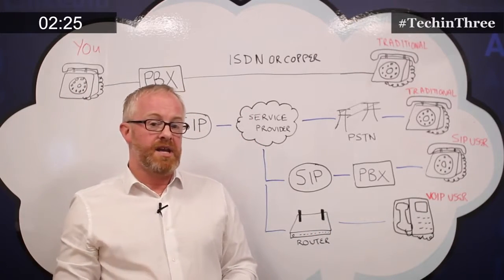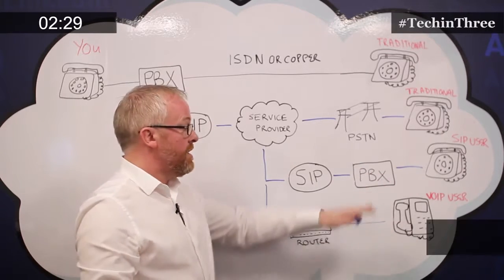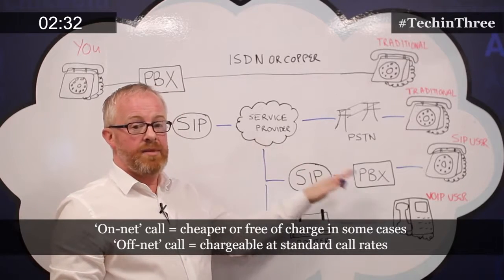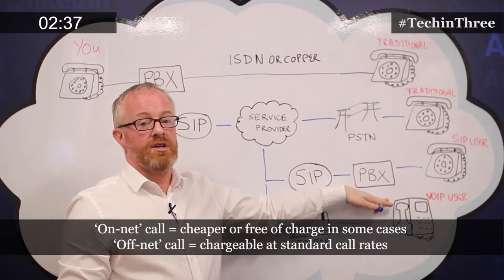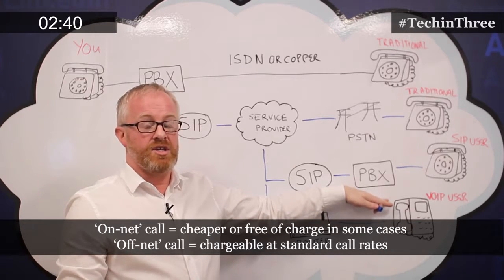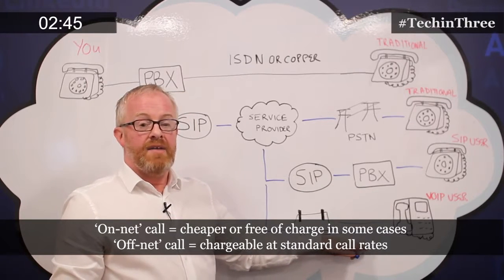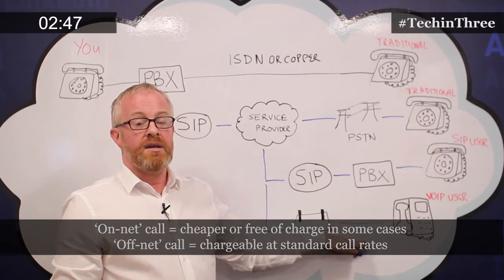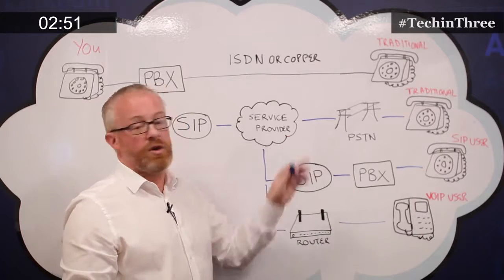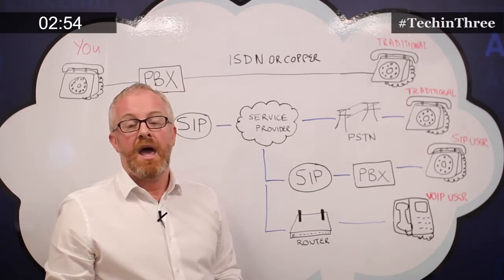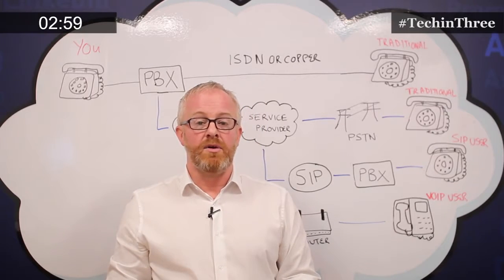There are a couple of charging options here that could potentially save you money. If the call has gone through SIP within the same company using the same service provider, that's what they call on-net call charging. If not, it's off-net call charging and standard rates apply. If they're using a different service provider, it's potentially more expensive than calling someone on your current provider. I hope that's given you a bit more clarity on SIP trunking — join us for the next episode of Tech in 3.